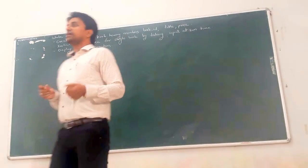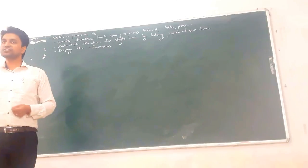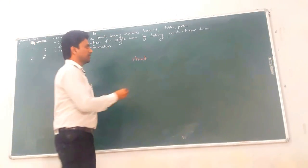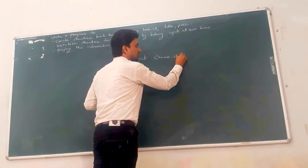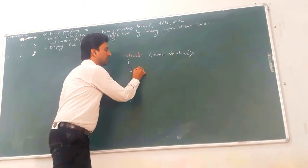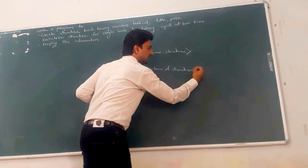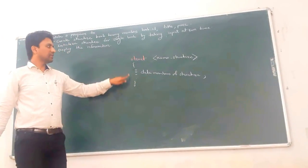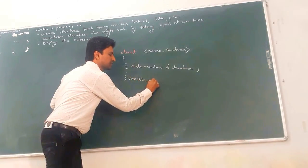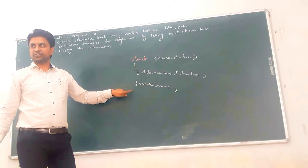Now, how do we initialize or create a structure? The syntax for creating a structure is: first, write the keyword 'struct', then the name of the structure, then an opening curly bracket. Inside the curly bracket, write the data members of the structure, separated by semicolons. Then close the curly bracket, write the structure variable name, and place a semicolon at the end. This is called structure declaration.